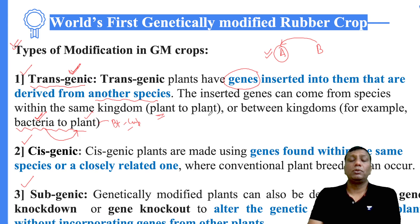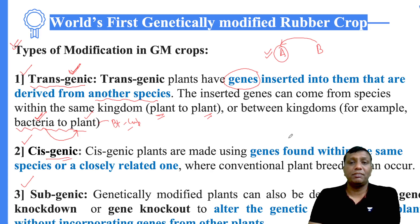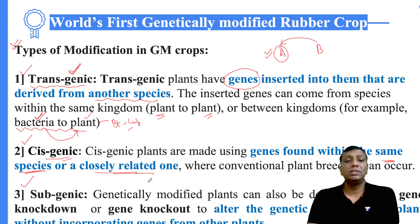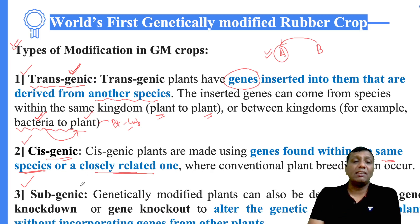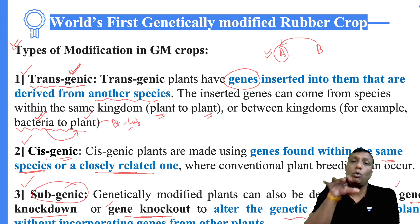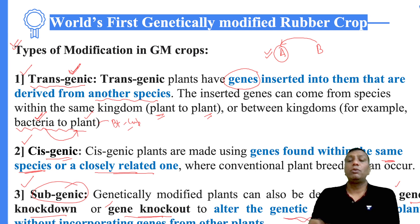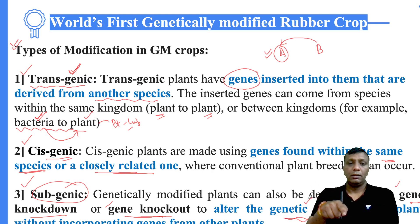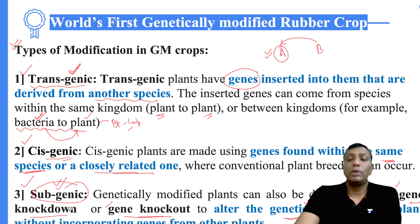Cisgenic modification involves transferring genes between closely related species within the same species group. Subgenic modification does not involve gene transfer from one organism to another; instead, changes are made within the organism's own genetic characteristics using processes like gene knockdown or gene knockout. By modifying its own genetic character internally, genetic modification is achieved — this is called subgenic modification.